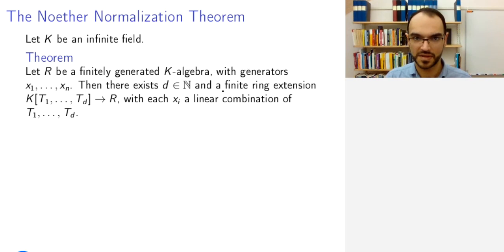And a finite ring extension from the polynomial ring in d variables into R. So there is this d, and this polynomial ring is just a polynomial ring by itself, and the ring extension is finite, meaning that R is a finitely generated module even over this polynomial ring.